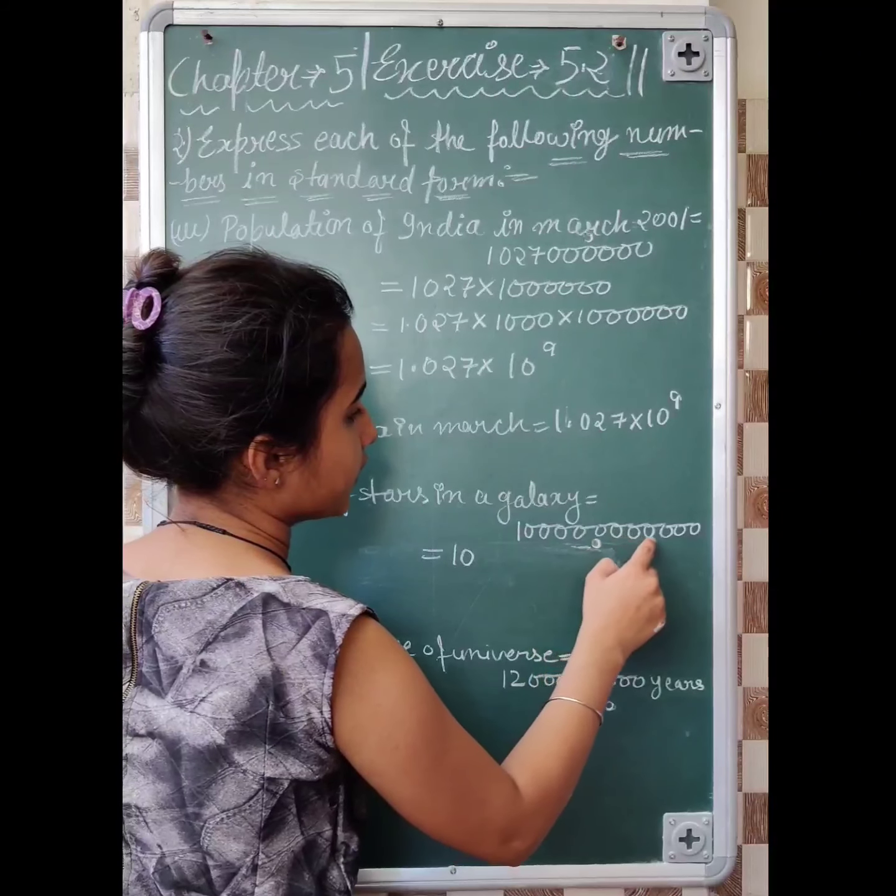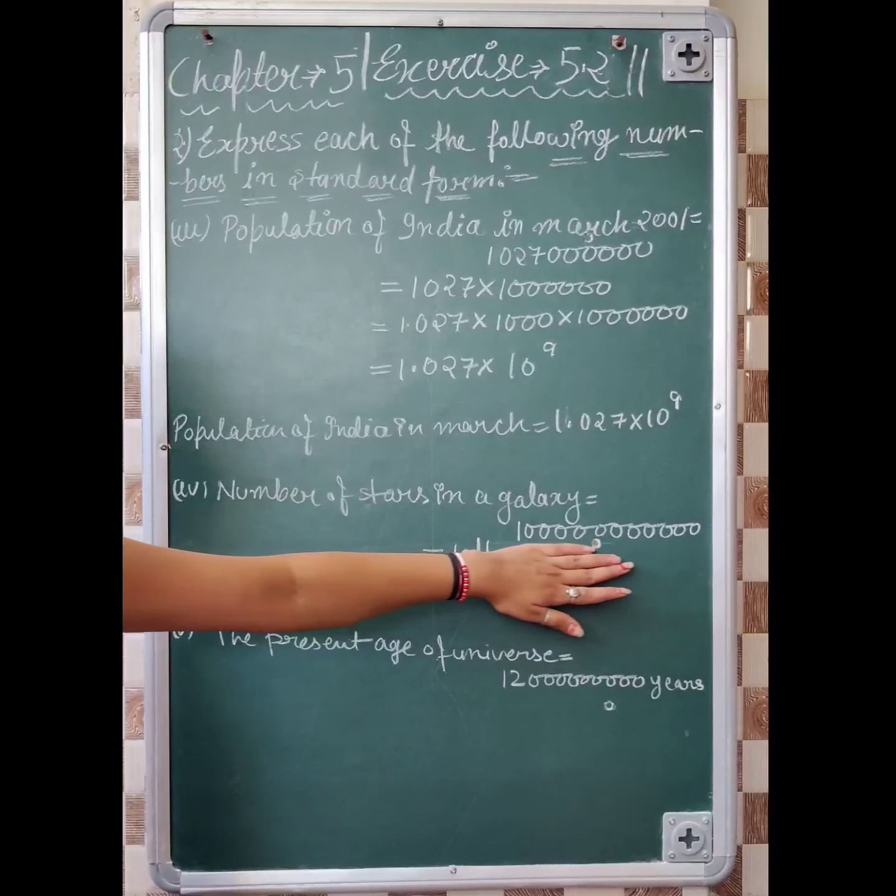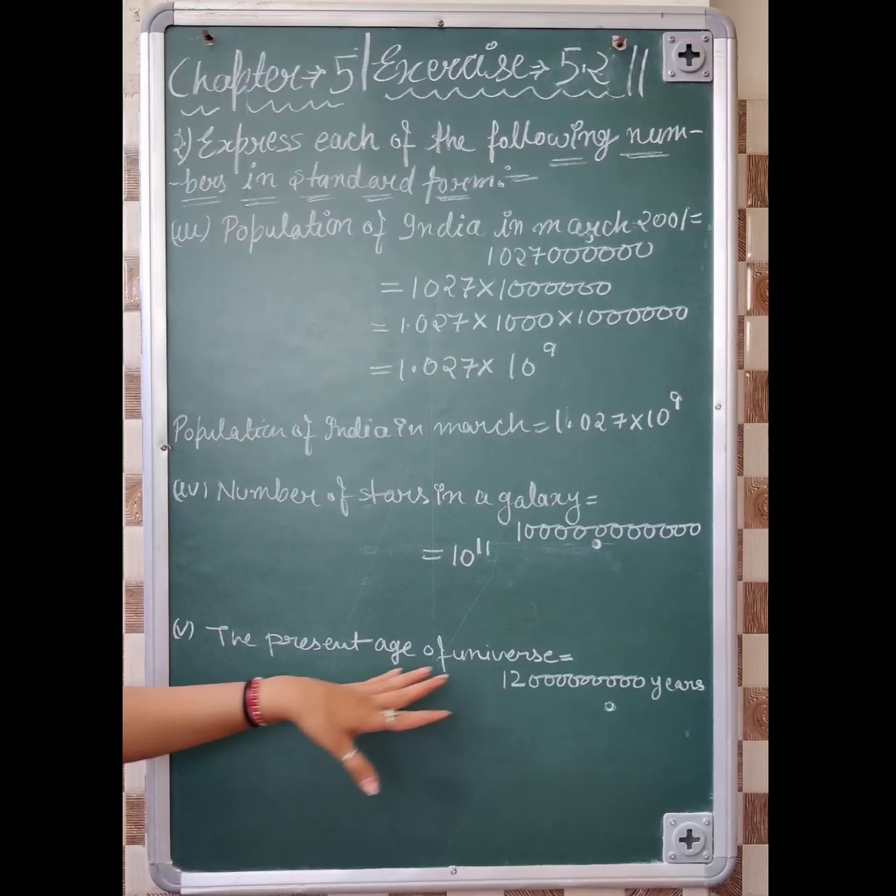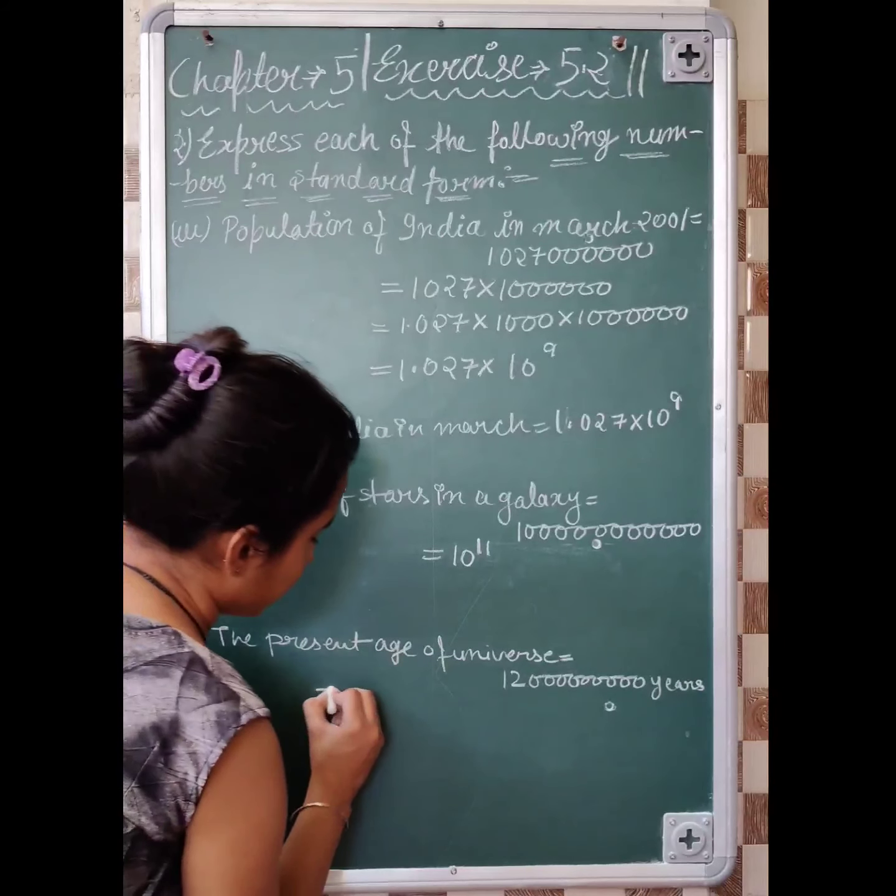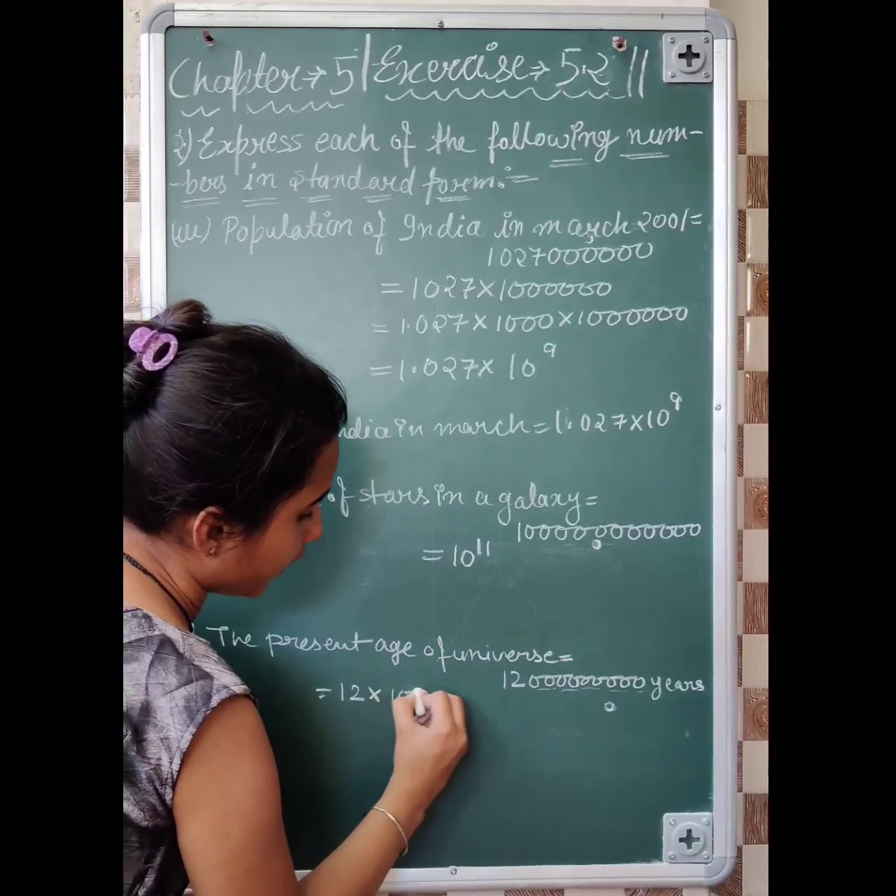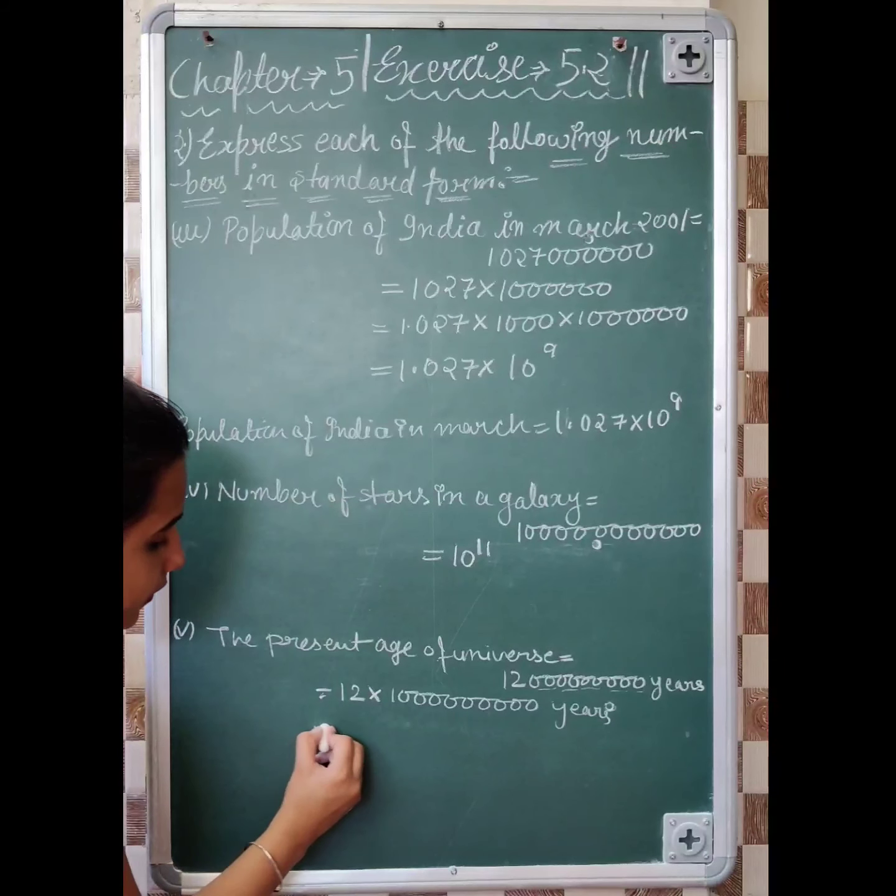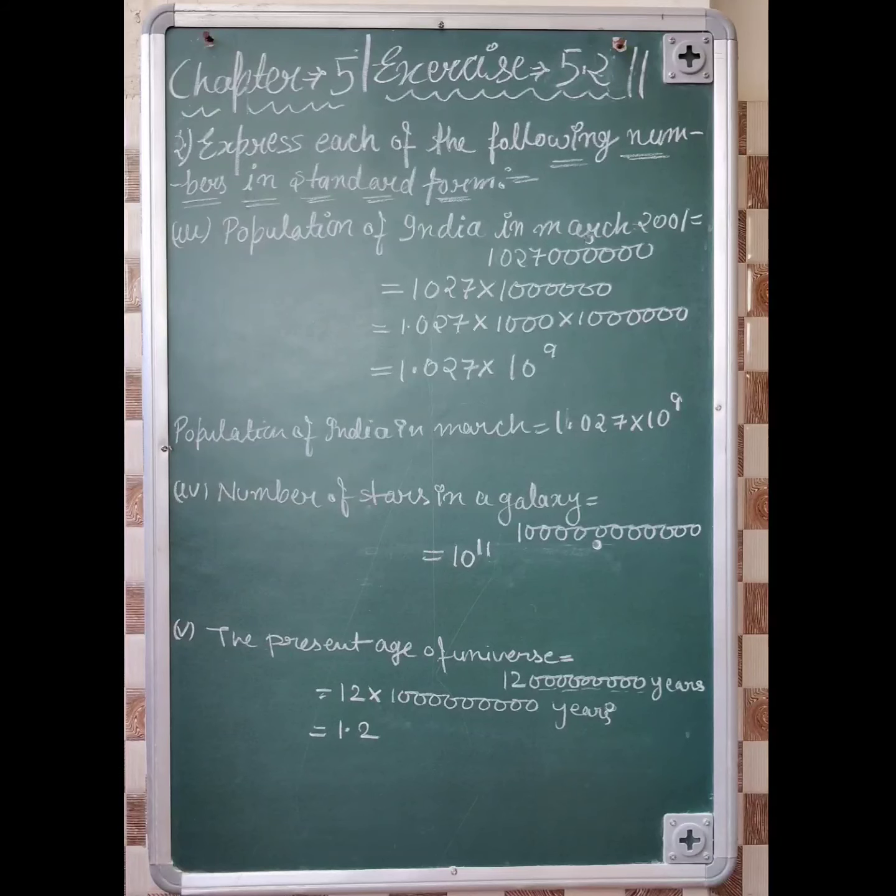10 raised to the power 11. You don't need to separate when all the digits are already zeros. But in mixed number cases you have to do it. The present age of the universe is 12 billion years. 1, 2, 3, 4, 5, 6, 7, 8, 9 zeros. After separating, we put a decimal.